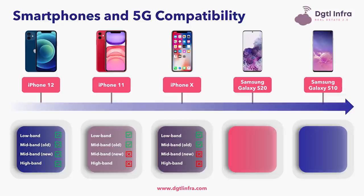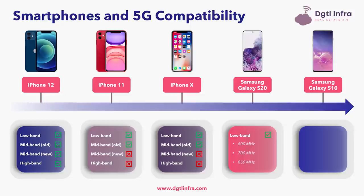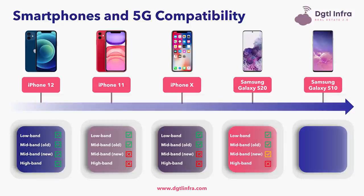The iPhone X is compatible with the same spectrum bands as the iPhone 11. Moving to Samsung Galaxy devices, the Samsung Galaxy S20 is compatible with low-band spectrum including 600 MHz, 700 MHz, and 850 MHz, and old mid-band spectrum including AWS at 1.7 GHz, PCS at 1.9 GHz, and BRS at 2.5 GHz. It is also compatible with CBRS at 3.5 GHz but not C-band. The base S20 model is not compatible with high-band spectrum — you need the Samsung Galaxy S20 UW, which stands for ultra-wideband, for millimeter wave.